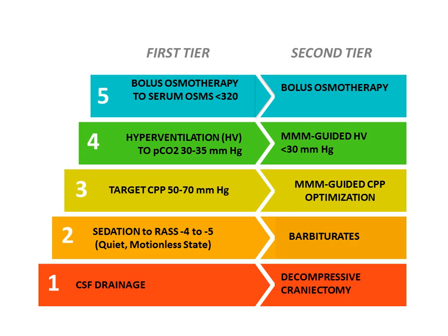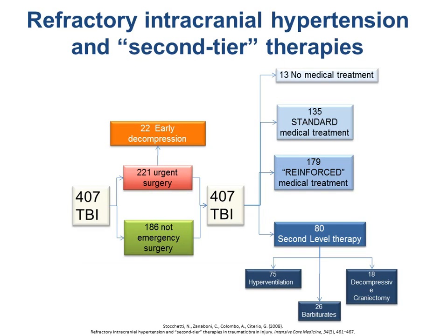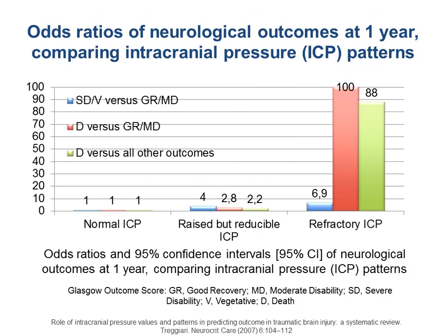And when you are failing with the first line, you go to the second line treatment — barbiturate coma, also hyperventilation guided by multimodality monitoring. Nino already presented this slide: the main message is that most patients, almost all patients, had a treatment of IICP. Maybe only sedation and CSF drainage is the standard medical treatment, while many others needed optimization of CPP and osmotic therapy, and 88% required second-level therapy.